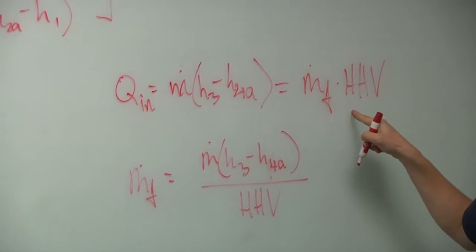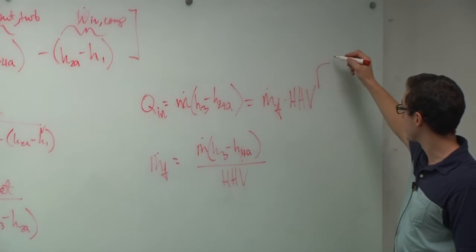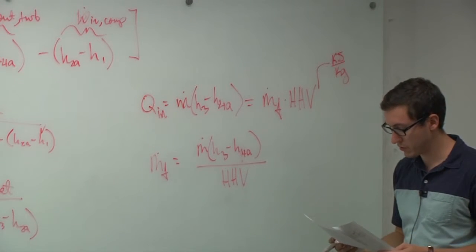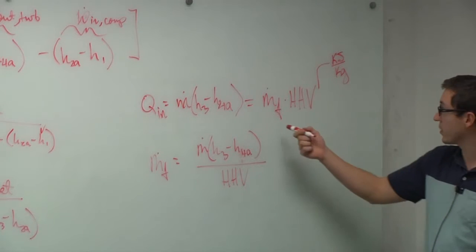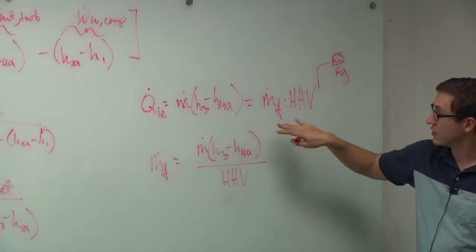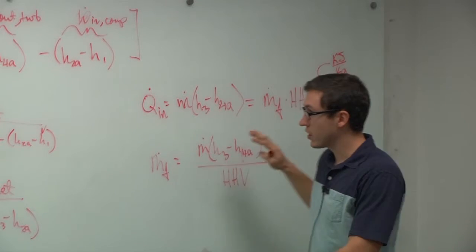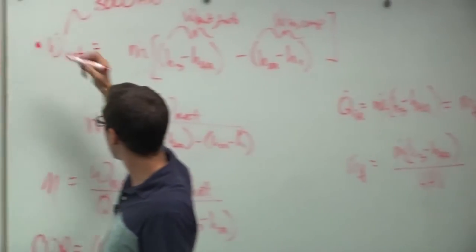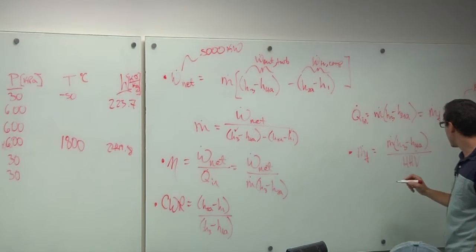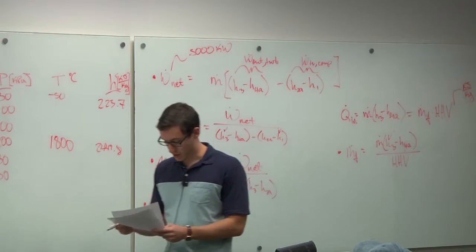That last thing we need is the fuel rate. We can say that Qin is equal to m dot times H3 minus H2A, which is also equal to... This m dot is the air. We say the m dot of the fuel times the heating value of the fuel. We can find m dot fuel by dividing this energy transferred to the air by the heating value. Have y'all ever seen this heating value equation before? So, what we're saying here is that this is in kilojoules per kilogram. They have that listed on your handout. Where it says heating value is 42,500 kilojoules per kilogram. If we multiply that by the flow rate, we get our Q dot in. This is basically at what rate is the fuel providing heat to this air, which is moving this fast and changing in energy this much.